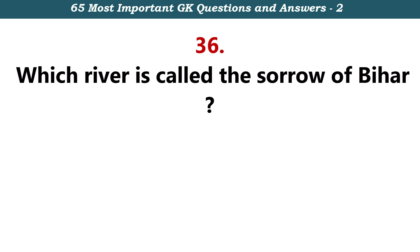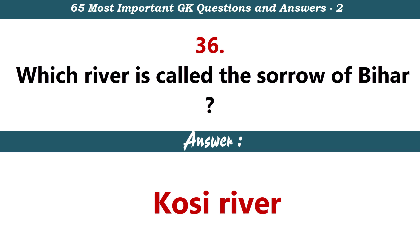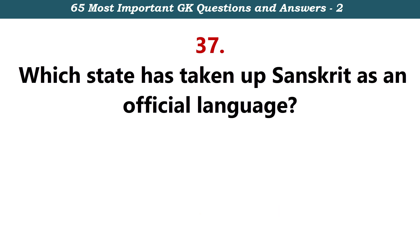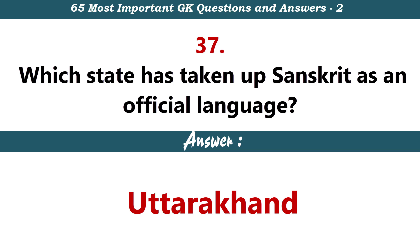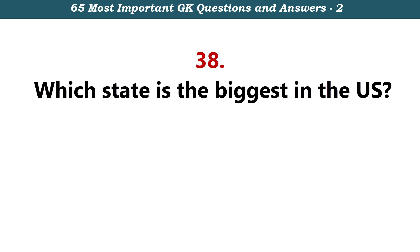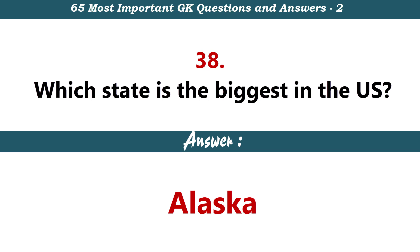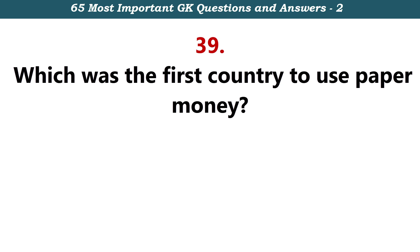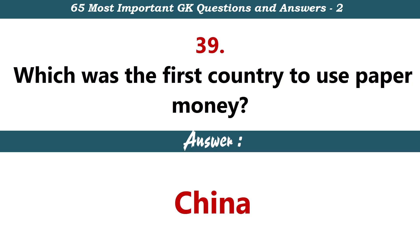Which river is called the sorrow of Bihar? Causi river. Which state has taken up Sanskrit as an official language? Uttarakhand. Which state is the biggest in USA? Alaska. Which was the first country to use paper money? China.